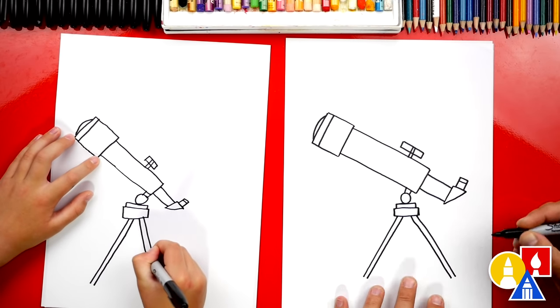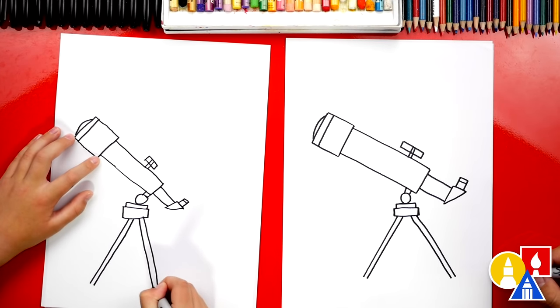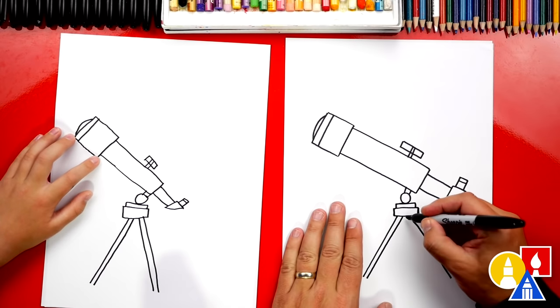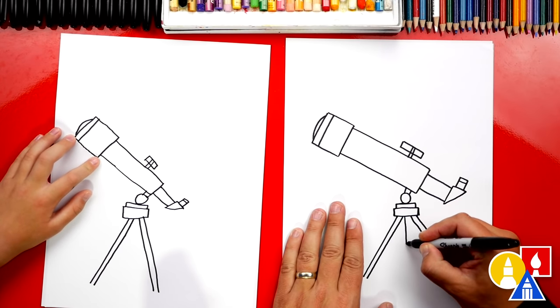This is not a tripod. We're missing a leg. It would just fall over. We need another leg. So let's draw two more lines right down the middle.